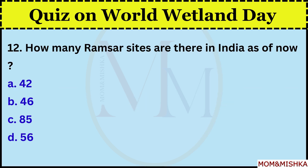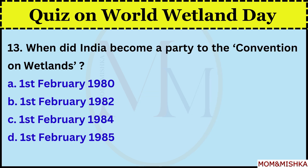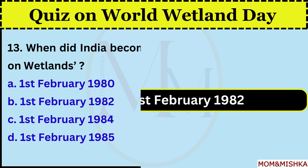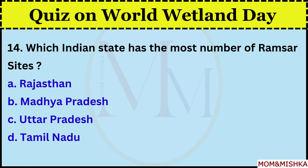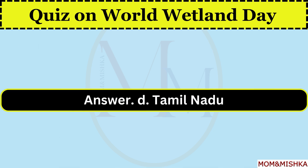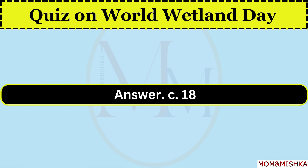How many Ramsar sites are there in India as of now? 85, option C. When did India become a party to the convention on wetlands? On 1st February 1982, option B. Which Indian state has the most number of Ramsar sites? Tamil Nadu, option D. Tamil Nadu has the highest number of Ramsar sites in India with 18 Ramsar sites, option C.